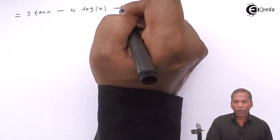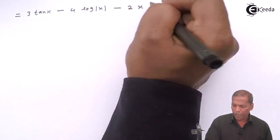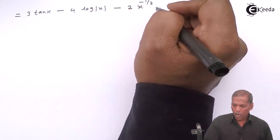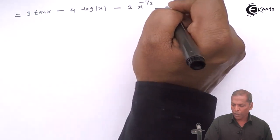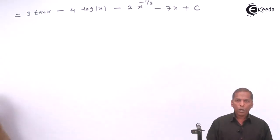And that 1 by 2 number present in the denominator, if we take in numerator, it become 2 into x raise minus 1 by 2. And the next term is minus 7x plus c. So this is the required solution for the given problem. Thank you.